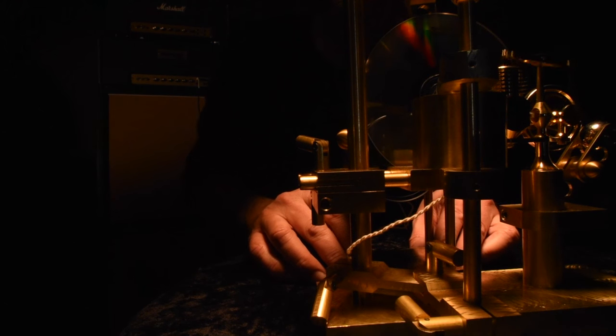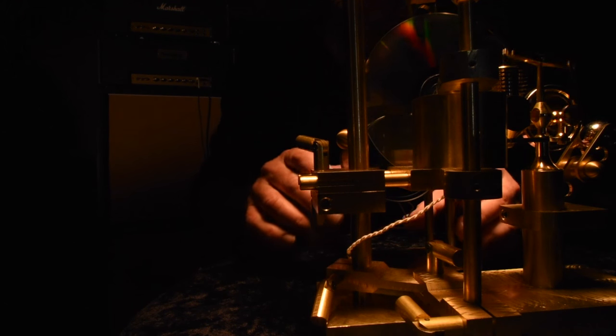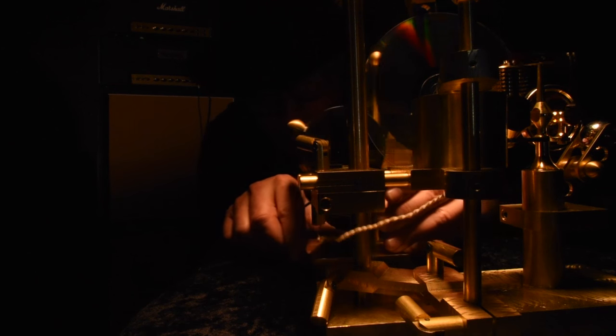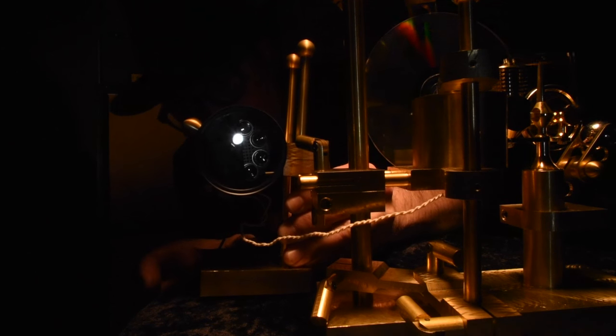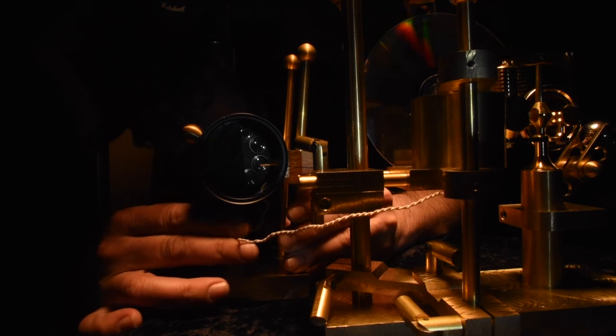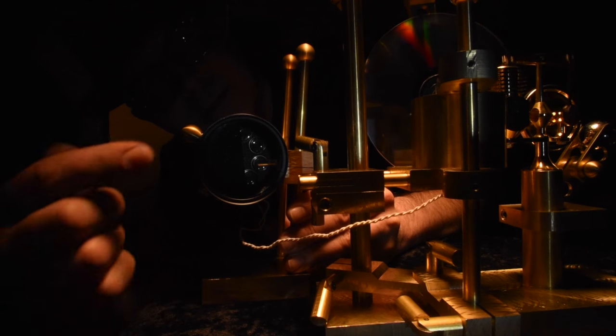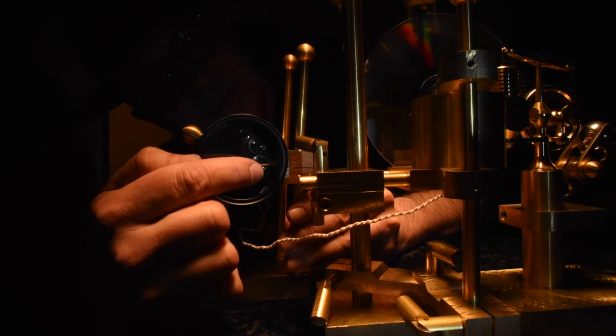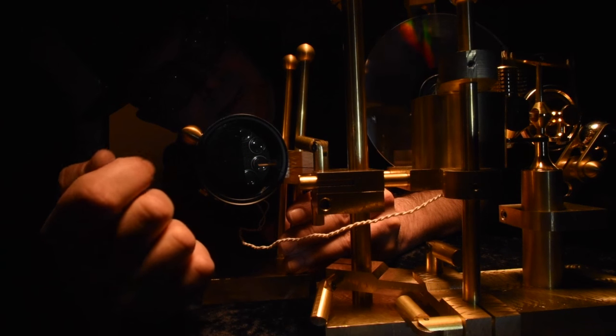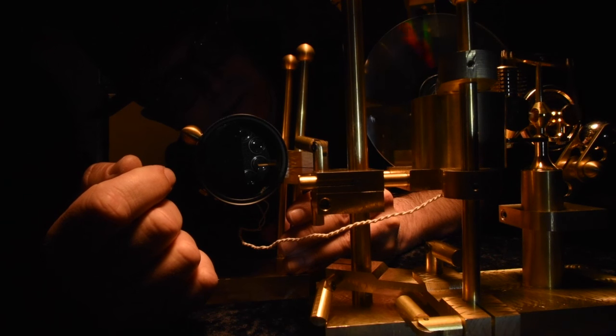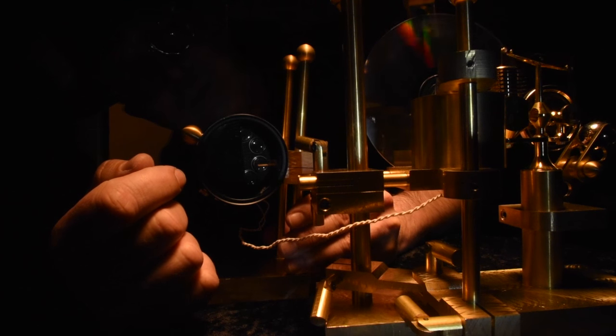The electronics package is where all of the magic happens. Let's take a peek inside. The electricity that feeds this electronics package comes from the solar cells through this cloth wire. And you can see inside, there are four photo eyes, photoresistive elements, that look at the light from the candle through the disc, and that's what controls the phaser or vibrato sound.